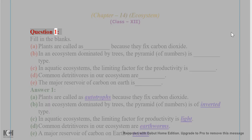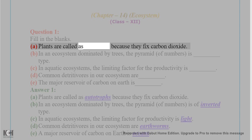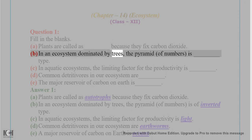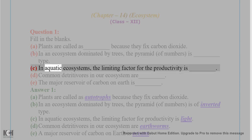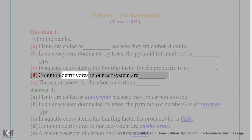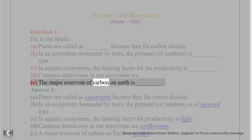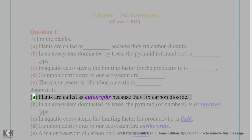Question 1: Fill in the blanks. (A) Plants are called as _____. (B) In an ecosystem dominated by trees, the pyramid of numbers is of _____ type. (C) In aquatic ecosystems, the limiting factor for productivity is _____. (D) Common detritivores in our ecosystem are _____. (E) The major reservoir of carbon on earth is _____.